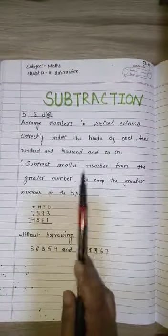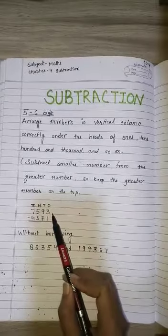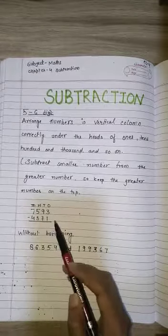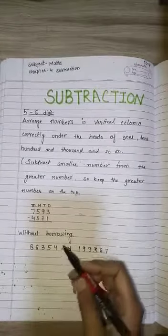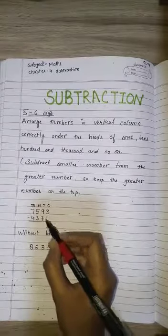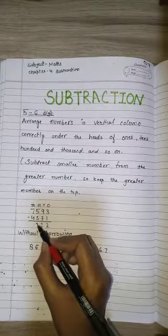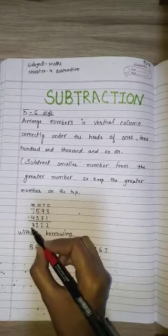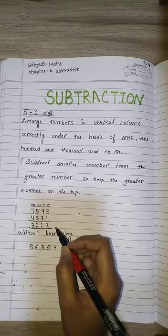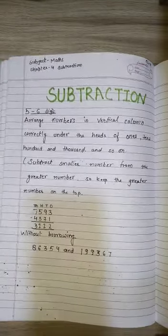Let's firstly do a four digit number, then we will start the six digit number. Three minus one is two, nine minus seven is two, five minus three is two, and seven minus four is three. So our answer is three thousand two hundred twenty-two.